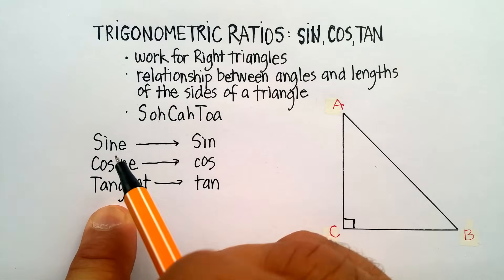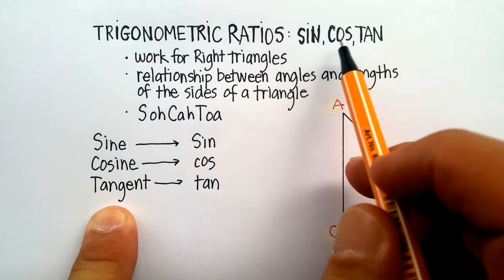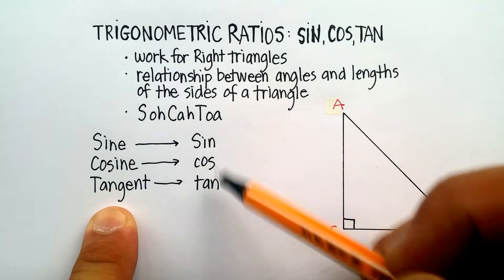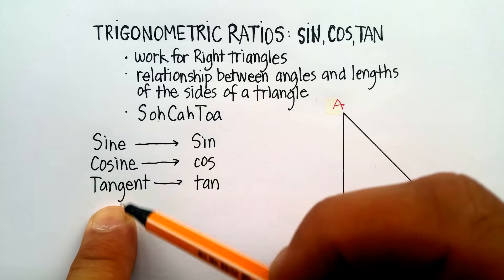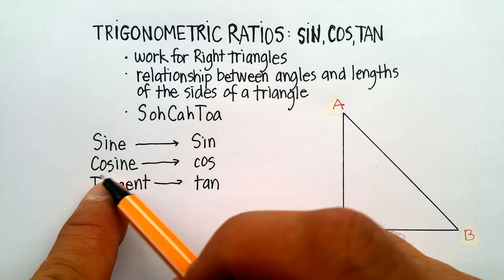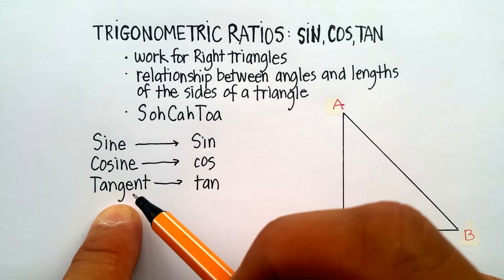And you can see what those relationships are called. They actually have names. Now, up here I have these abbreviations, S-I-N, C-O-S, and T-A-N. And these are the abbreviations, but this is the real word from which they're abbreviated from. So it's actually pronounced sine, cosine, and tangent.